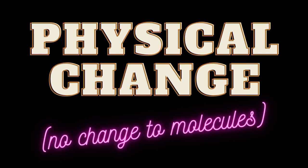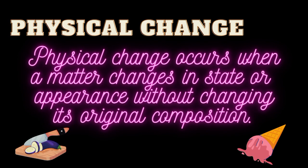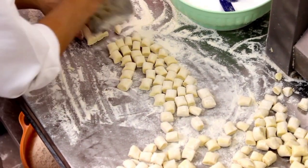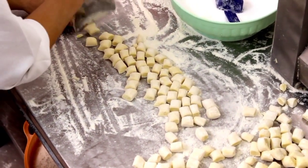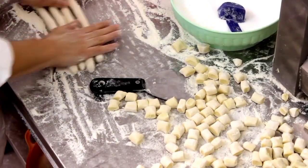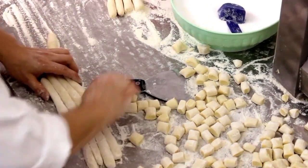Physical change means no change to molecules. Physical change occurs when matter changes in state or appearance without changing its original composition. For example, if you shape a piece of dough into a round bread or square, or cut it into smaller pieces, the composition of the dough remains the same.